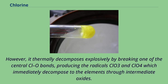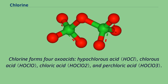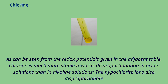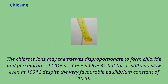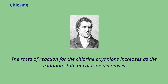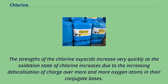Chlorine forms four oxoacids: hypochlorous acid, chlorous acid, chloric acid, and perchloric acid. Chlorine is much more stable towards disproportionation in acidic solutions than in alkaline solutions; the hypochlorite ions also disproportionate to produce chloride and chlorate, but this reaction is quite slow at temperatures below 70°C in spite of the very favorable equilibrium constant of 10²⁷. The chlorate ions may themselves disproportionate to form chloride and perchlorate, but this is still very slow even at 100°C despite the very favorable equilibrium constant of 10²⁰. The rates of reaction for the chlorine oxyanions increase as the oxidation state of chlorine decreases. The strengths of the chlorine oxyacids increase very quickly as the oxidation state of chlorine increases, due to the increasing delocalization of charge over more oxygen atoms in their conjugate bases. Most of the chlorine oxoacids may be produced by exploiting these disproportionation reactions.